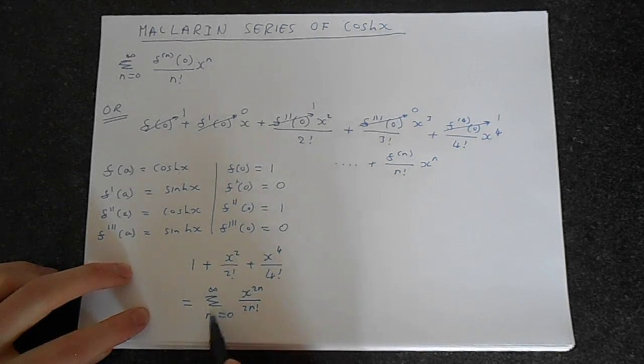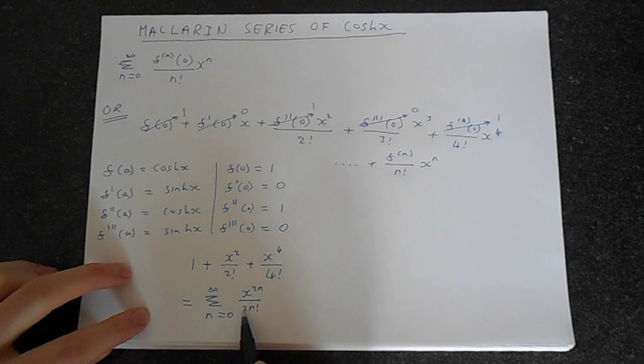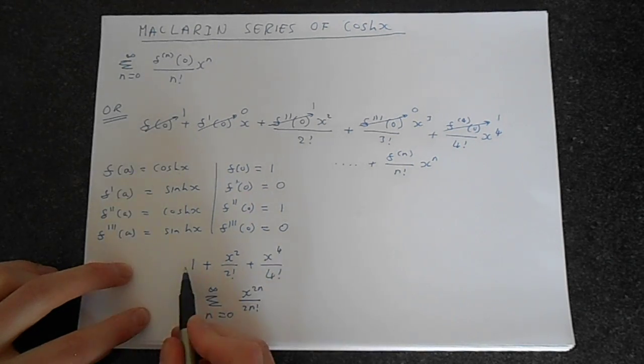So you'll notice when n is 0, you're getting x to the power of 0, which is 1, over 0 factorial, which is 1. So you get 1.